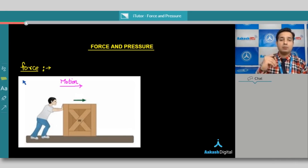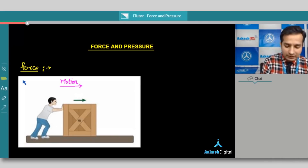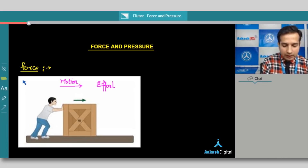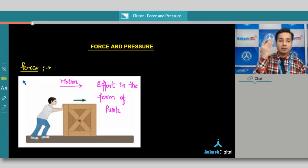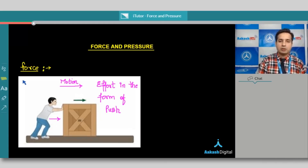For moving the block in the right-hand side direction, he would have to apply some force — that is, he would have to make some effort to move this block. In this case, we say that an effort is made on the block in the form of a push. If a body is being pushed from the back side in the forward direction, the block is going to start moving forward. So one form of effort is a push.